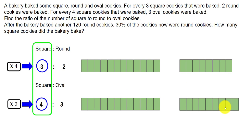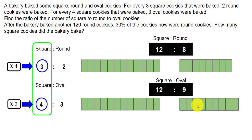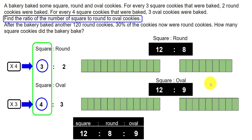Now the square units are a constant 12 across both ratios. So the ratio of square to round is 12:8, and square to oval is 12:9. The question asks for square to round to oval, which is simply 12:8:9. That's the answer for the first question.